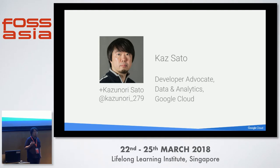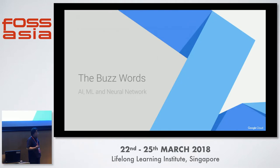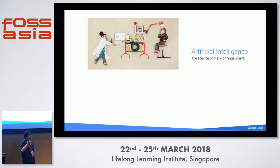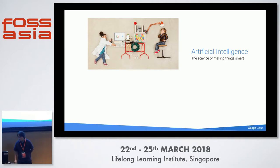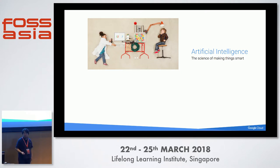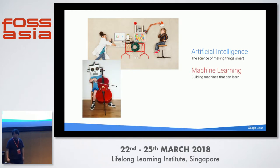Let's start talking about the meanings of these buzzwords like AI, ML, or neural network. There's no clear definition of what AI or artificial intelligence is, but you can think of it as the science of making things smart. We'd like to make smarter IT systems rather than the ordinary existing IT systems programmed by human programmers. And one of many different approaches to realize the vision of AI is machine learning.